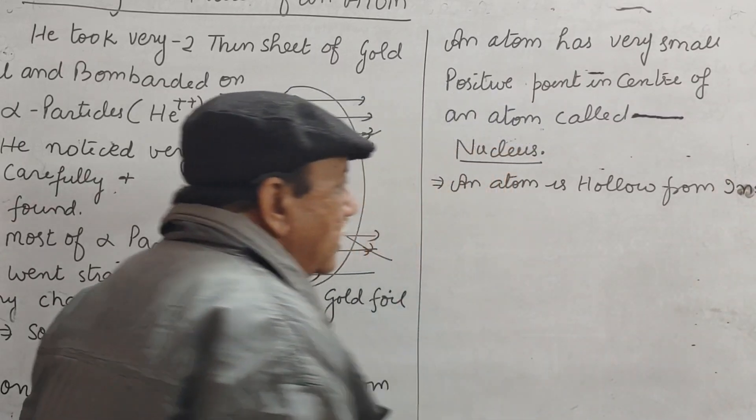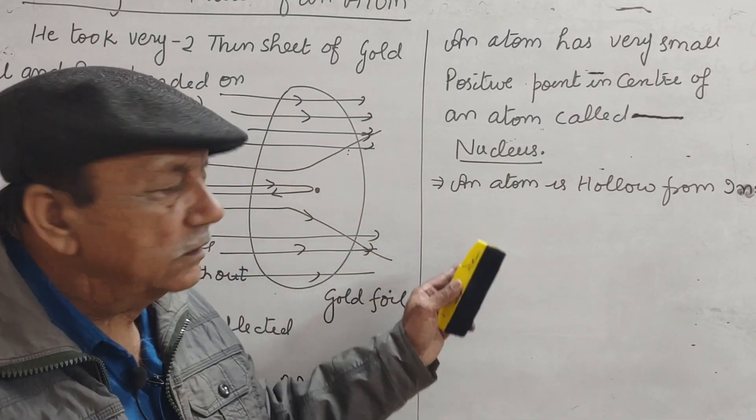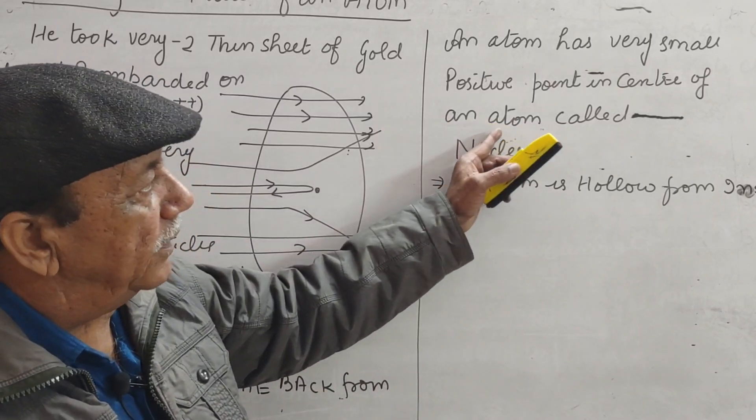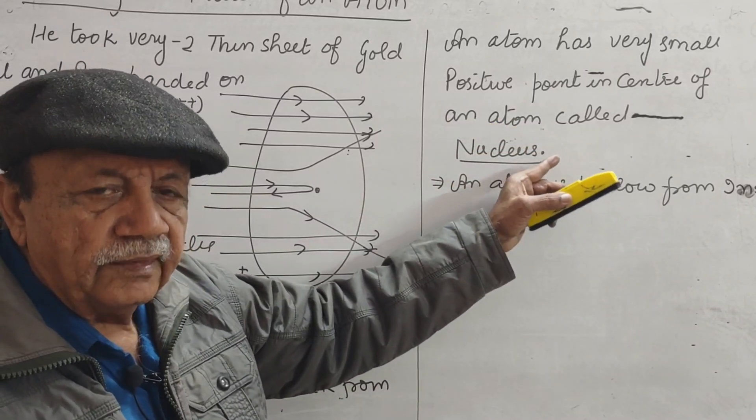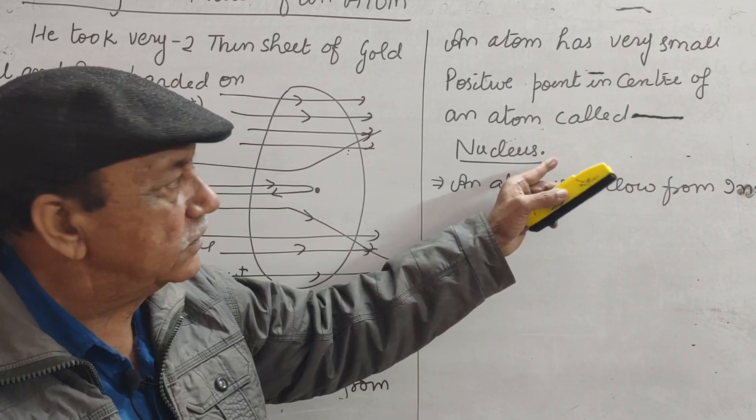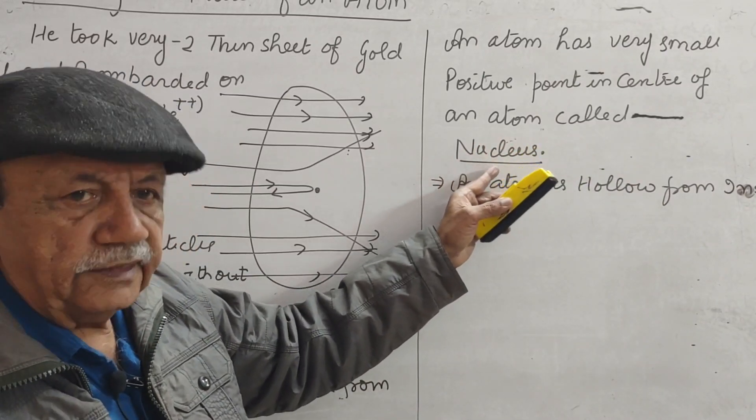As alpha particles went straight, very few alpha particles were deflected away from the center. He called it Nucleus.